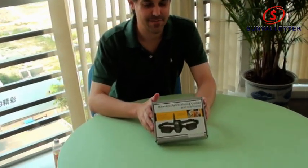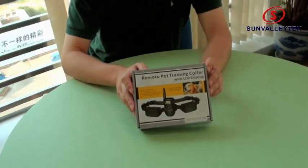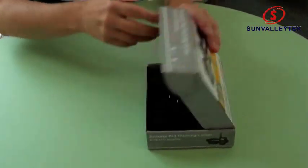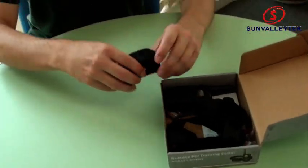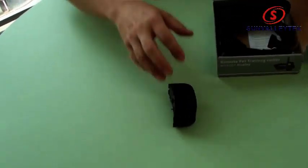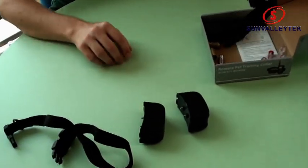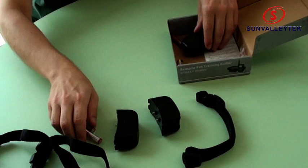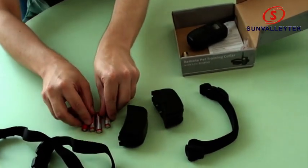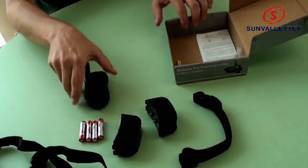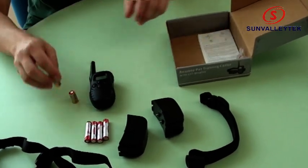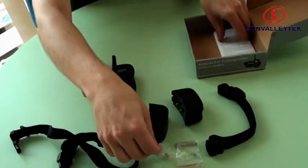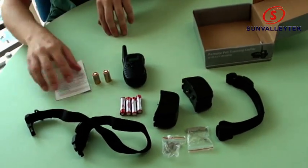This is the two-receiver set of dog shock training collars. Receiver one, receiver two, collar one, collar two, batteries for the receivers, remote, batteries for the remote, shock studs for the receivers, and instruction manual.